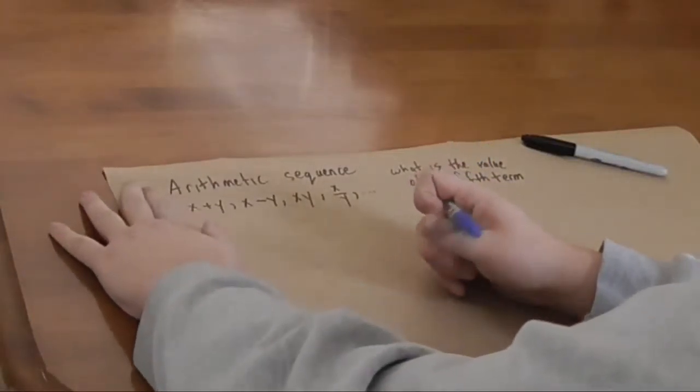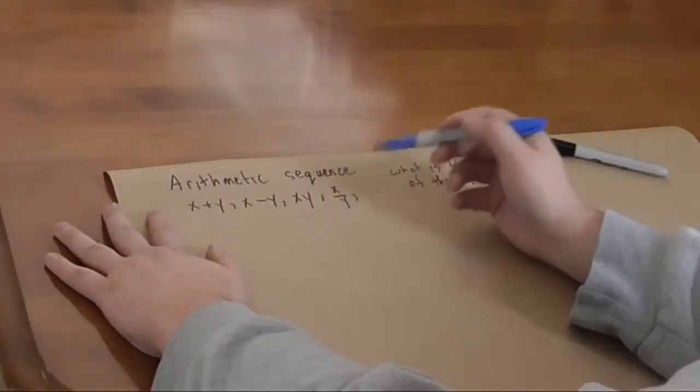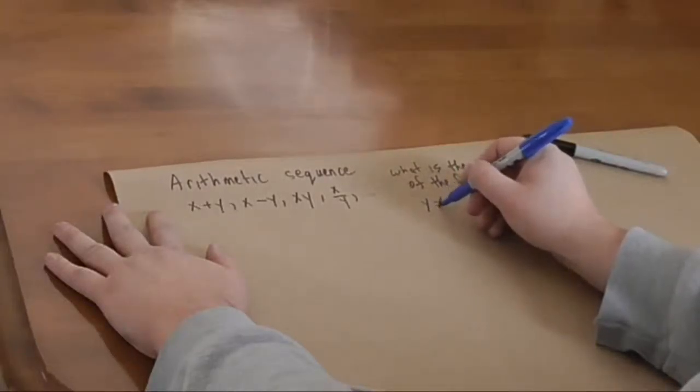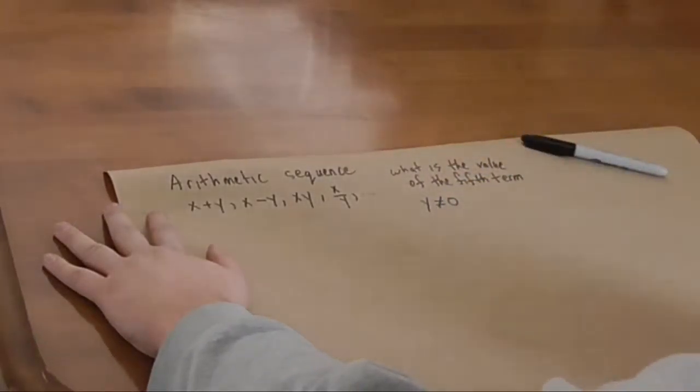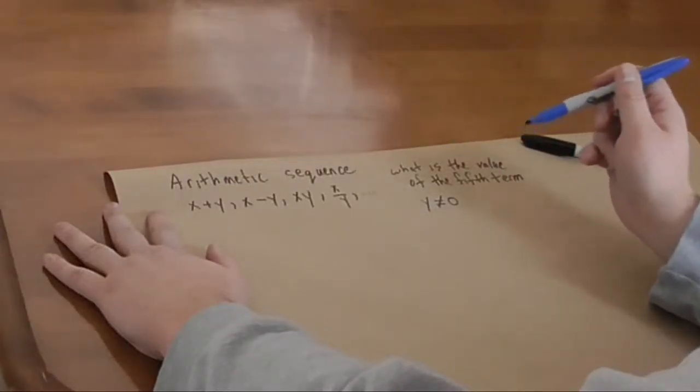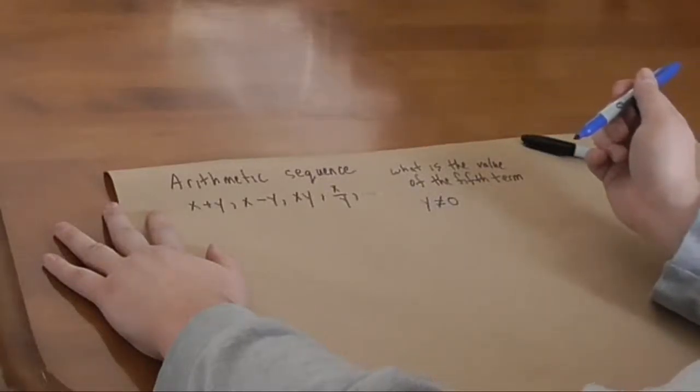But it turns out that it's not nearly so scary as it first appears. So, first of all, what do we know? Based on the fourth term, we know that y is not equal to zero. That will be important later because we'll have to reject an invalid solution.